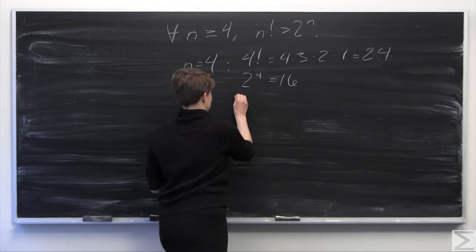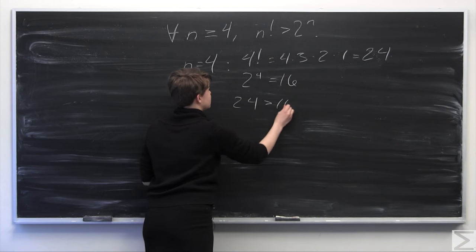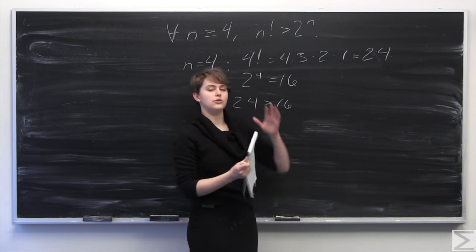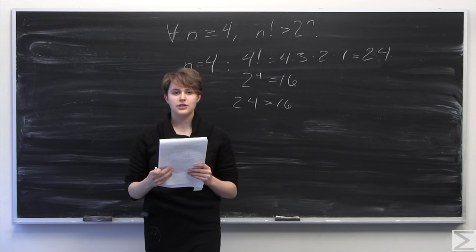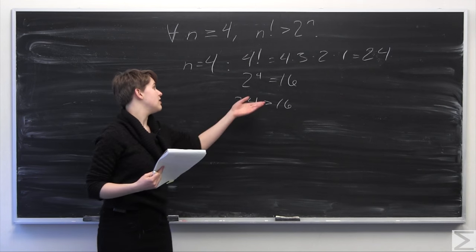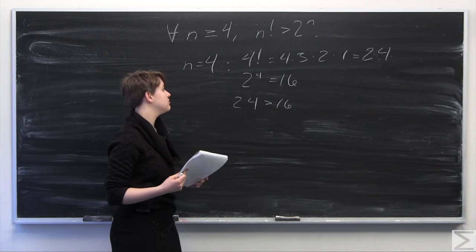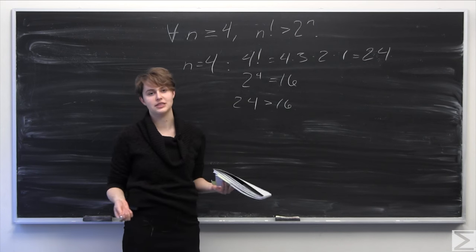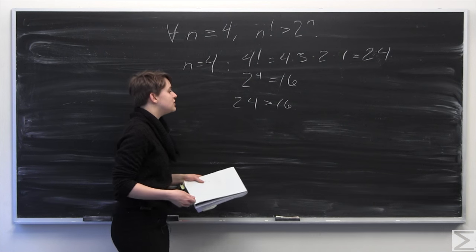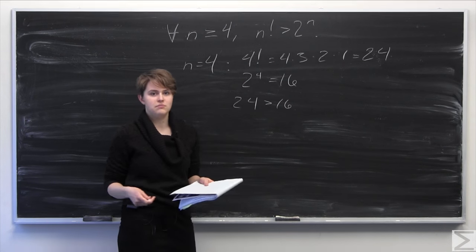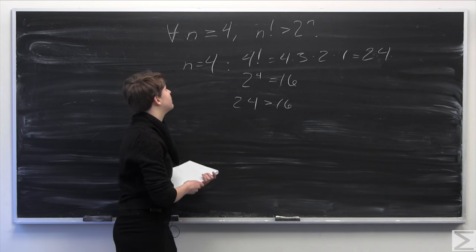and we know here that 24 is greater than 16. So this holds, our inequality holds. So we're going to go ahead and assume that this holds for some n, and we're going to call it our induction hypothesis. So now we need to test n plus 1 to determine that this is true for all n greater than or equal to 4.